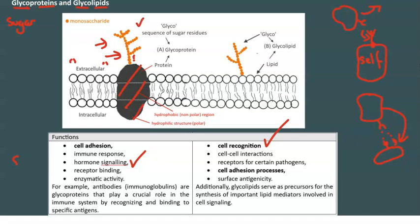The second molecule to be aware of is the glycolipid — a combination of sugars and lipids. The sugar residues are on the outside in the extracellular fluid, as shown in the diagram.